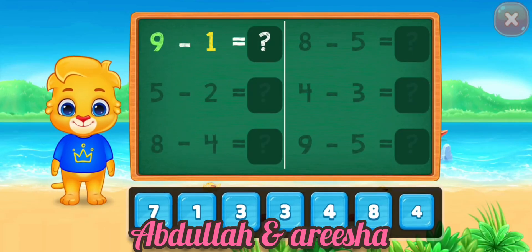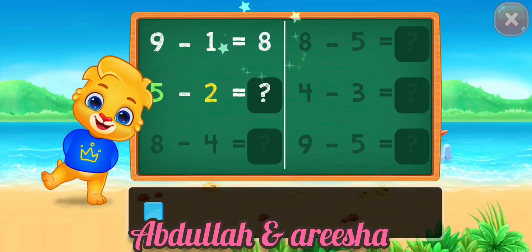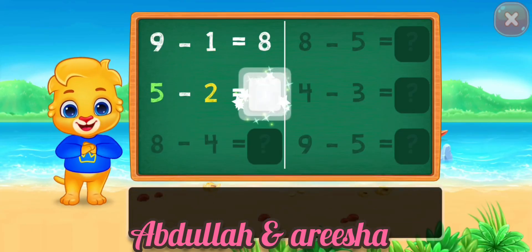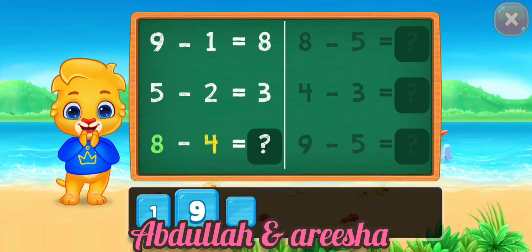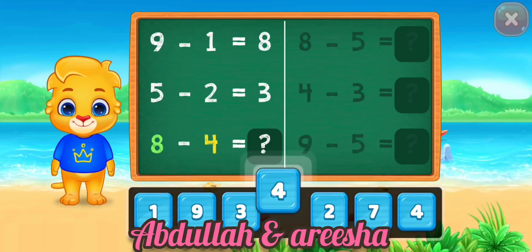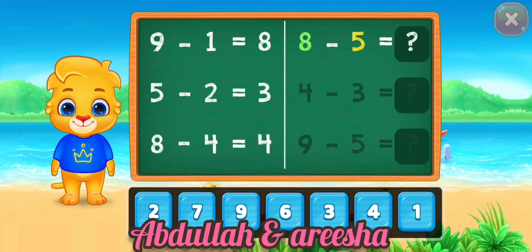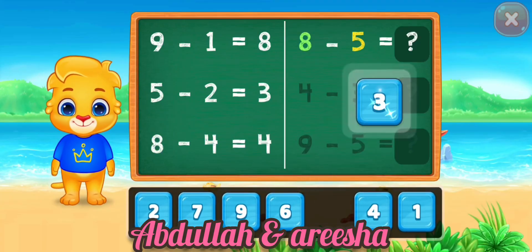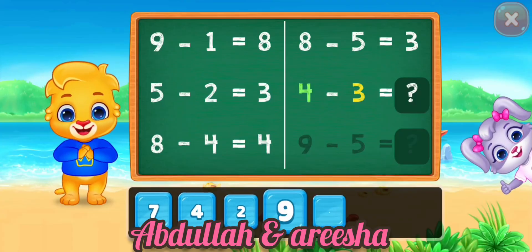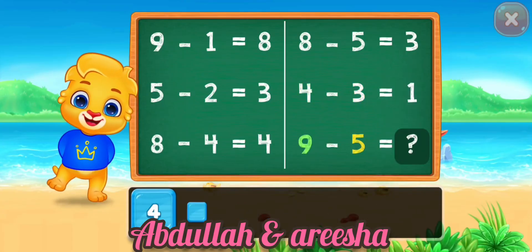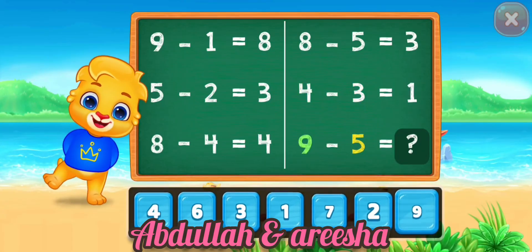9 minus 1 is equal 8. 5 minus 2 is equal 3. 8 minus 4 is equal 4. 8 minus 5 is equal 3. 4 minus 3 is equal 1. 9 minus 5 is equal 4.